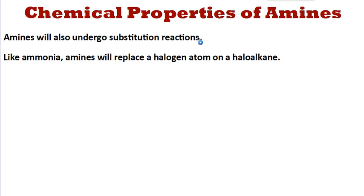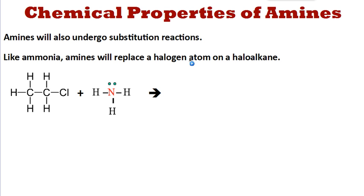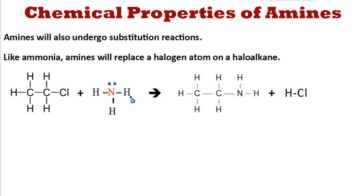Like ammonia, amines will replace a halogen on a haloalkane. If we take chloroethane and add ammonia to it — remember ammonia has that nitrogen with a lone pair of electrons on it — the halogen is the functional part of this organic compound. When these two react, the chlorine group is replaced with an NH2 group from the ammonia, and we're left with an HCl. So we end up with a primary amine being formed and a hydrogen halide — in this case hydrogen chloride.